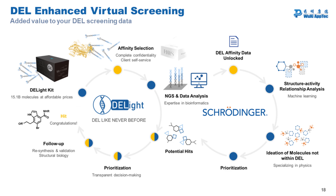To get the most out of your DEL Lite affinity data, you can use this data in machine learning. We perform machine learning in close collaboration with Schrödinger, so you can discuss with Schrödinger what kind of needs you have and what kind of structure-activity relationships you are interested in, and then Schrödinger will work closely with you.